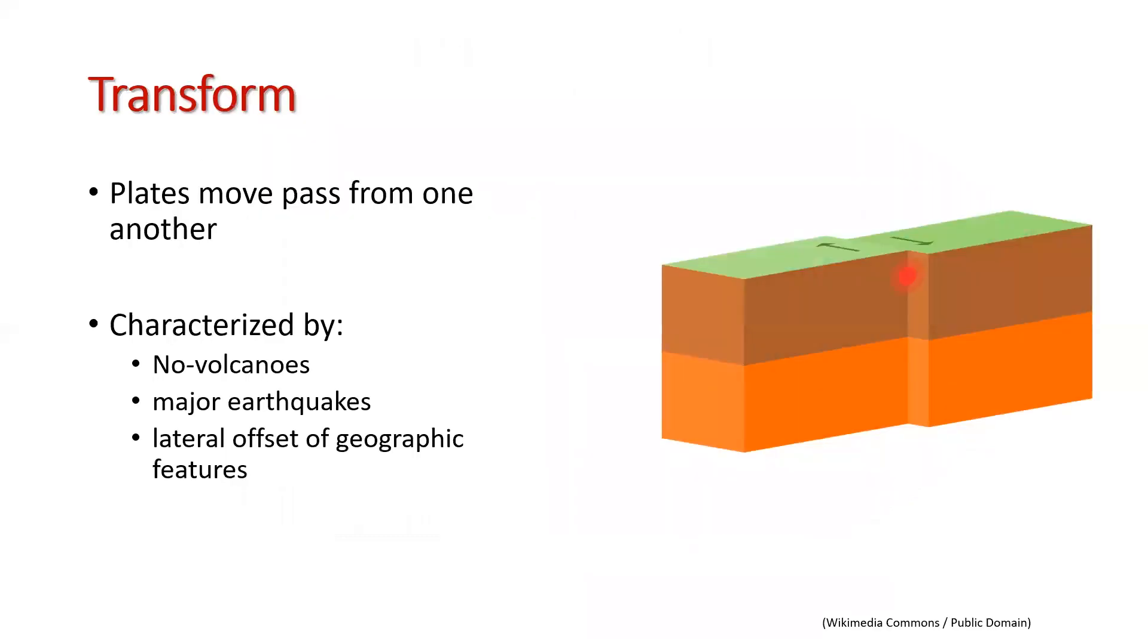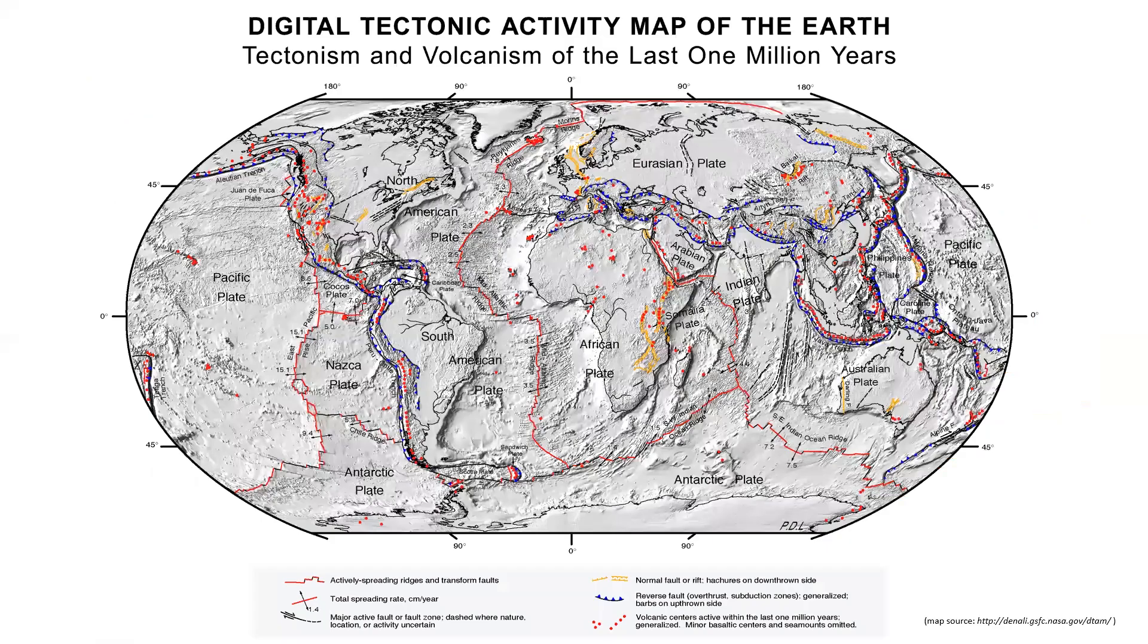The last type of plate boundaries is transform boundaries. A transform boundary is where the plates are moving past one another. These boundaries are characterized by the absence of volcanoes, big earthquakes, and lateral offset of geographic features due to the lateral or horizontal movement of the plates. The most famous example of a transform boundary is the San Andreas Fault.